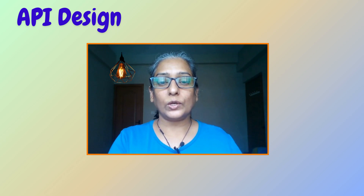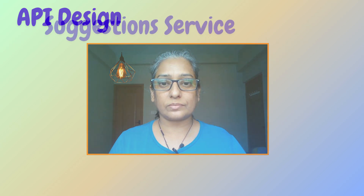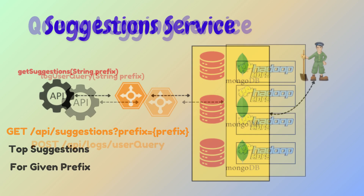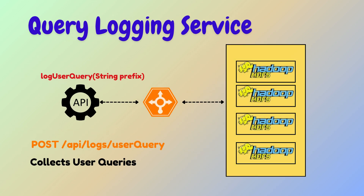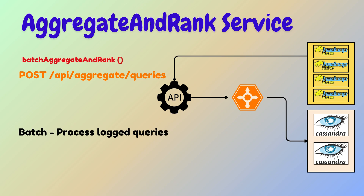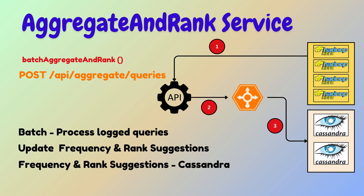To handle query suggestions and updates, we need at least four APIs using a microservices architecture. The get suggestions API retrieves the top suggestions based on the given prefix. The log user query API collects user queries for future aggregation and processing. The batch aggregate and rank process logs queries, updates their frequency, and ranks suggestions — these details are loaded into Cassandra, which is suitable for storing large amounts of data in tabular format.